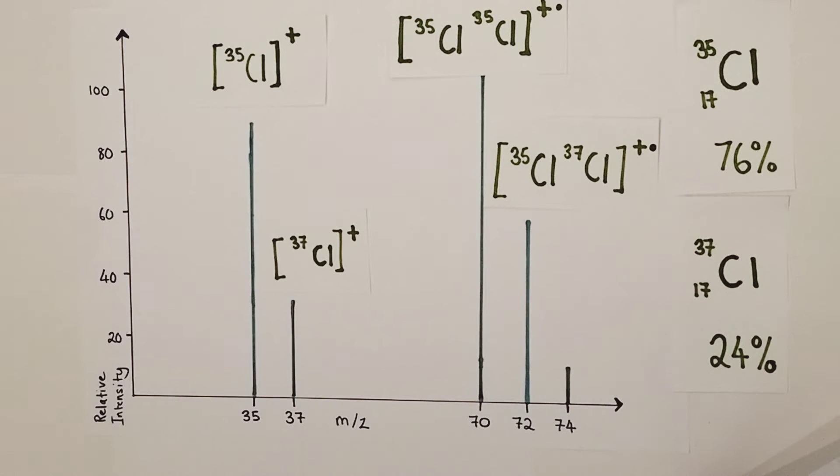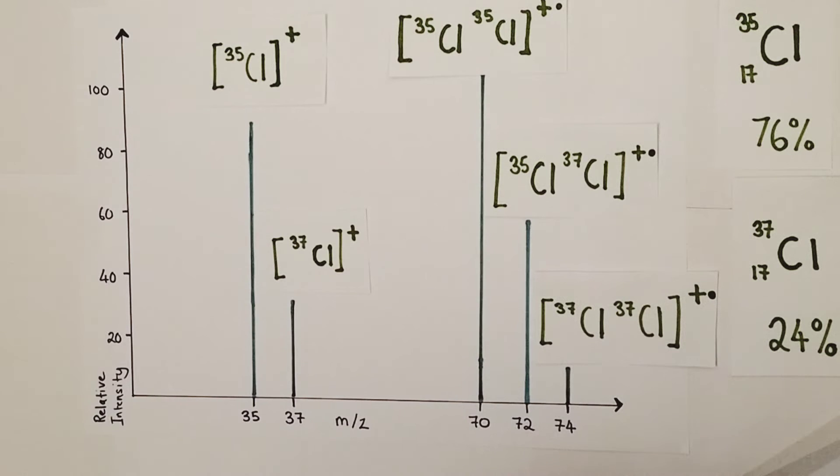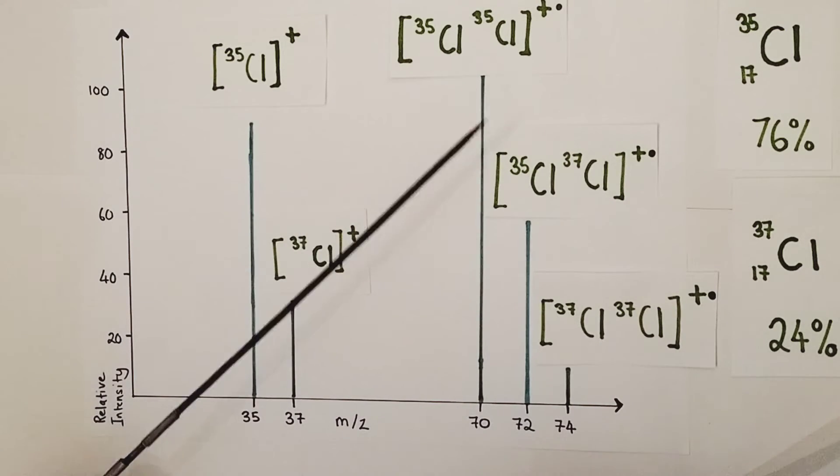Finally the less prominent peak at 74 - the only way to get a relative mass of 74 is if we had two chlorine-37 isotopes covalently bonded together to form a chlorine molecule. You may be wondering why the abundance of chlorine-35 molecules is so high and the abundance of chlorine-37 molecules is quite so low and why you get this particular distribution of ratios. Well we can explain this using a little bit of simple maths and multiplication of fractions.